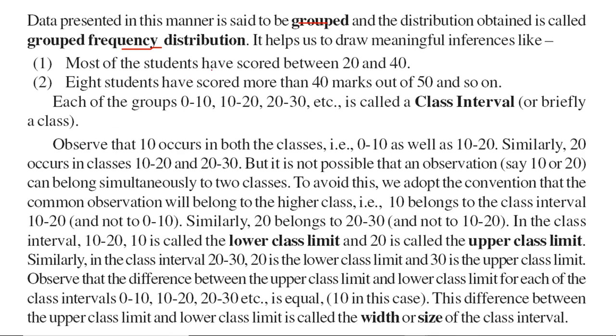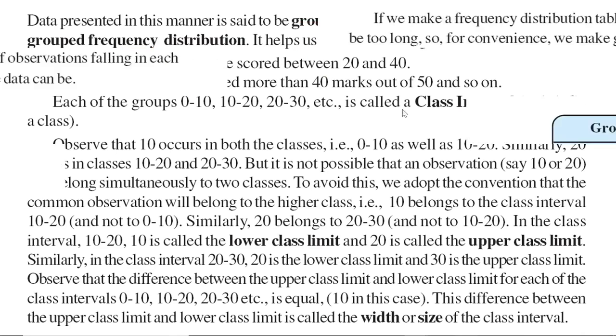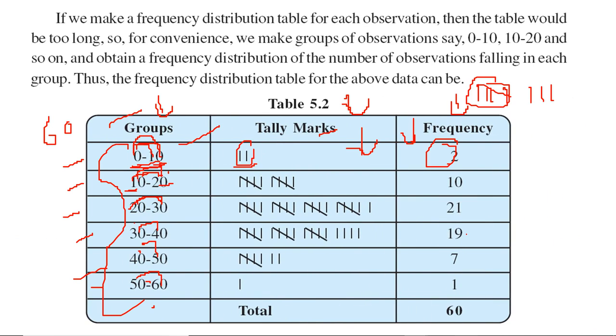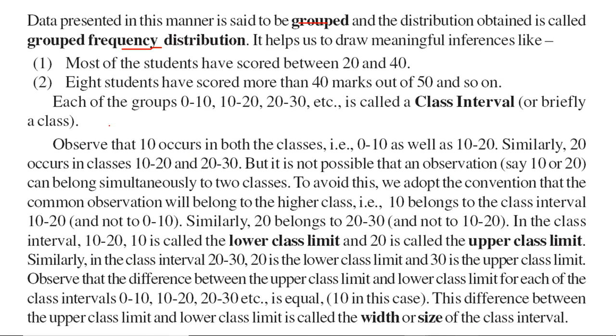Now from here you can draw very good inferences, like most of the students have scored between 20 to 40. From 50 to 60, only one student has secured marks. There are various groups we have made - we call them class intervals.